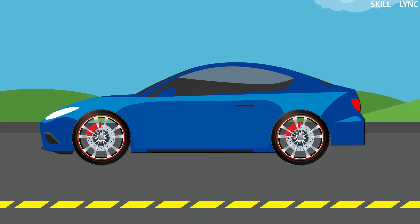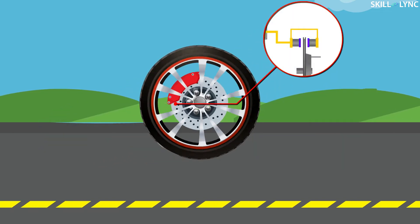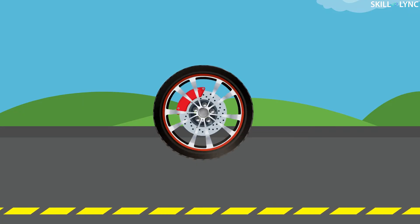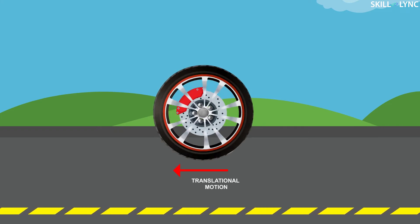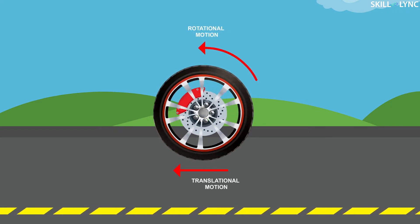For a better understanding of the problem, it is vital that you have a clear understanding of how a normal brake works and also the steering situations involved during braking. When the driver applies the brakes, the brake pads are pressed against the wheel discs, which in turn stops their rotation. As the wheels stop rotating, the vehicle stops. This is how normal braking happens. When it comes to steering, it works on a simple rolling principle. A rolling wheel usually has two kinds of motion — it translates in the direction of vehicle movement and it rotates on its own axis as well. Therefore, it has both translational and rotational velocities.